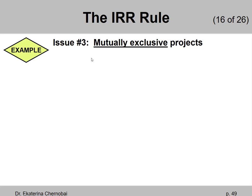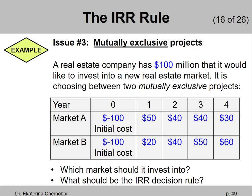Now let's look at the last issue — Issue number three: mutually exclusive projects. Here we are comparing two projects. We have $100 million and that's all we can invest. We cannot invest into two projects, A and B. That's what mutually exclusive means — we have to pick one.